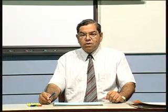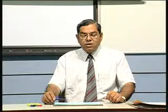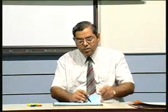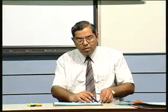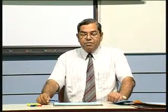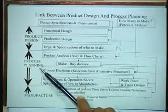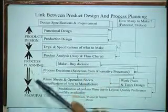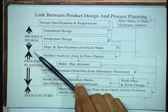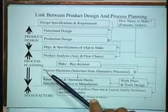This particular phase is often known as process planning. In today's lecture, we are going to be talking about the interactions between product and process design, essentially. This diagram summarizes the major activities of product design, process planning and manufacture, which generally proceed in this particular sequence. Let us recall what exactly product design is, what are the inputs and outputs to product design, and subsequently how process planning takes place, ending with the aspect of manufacture.